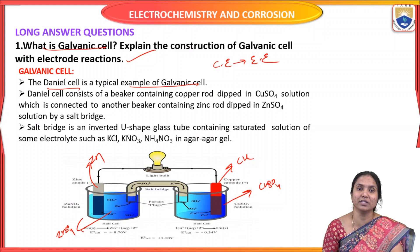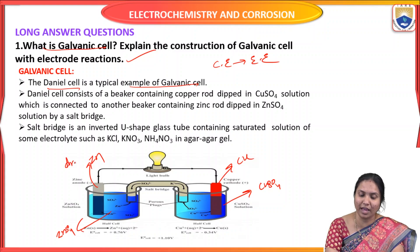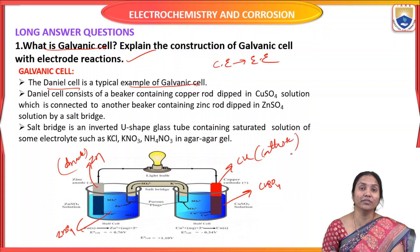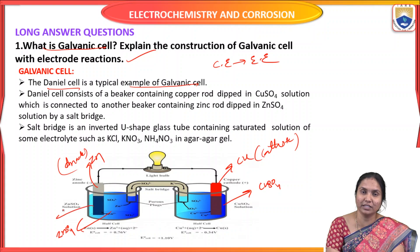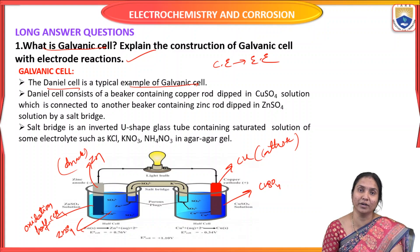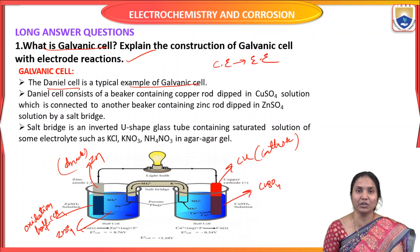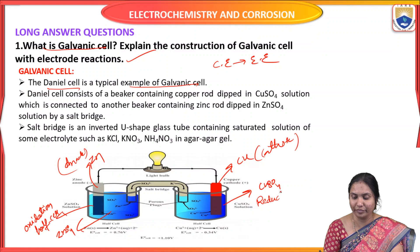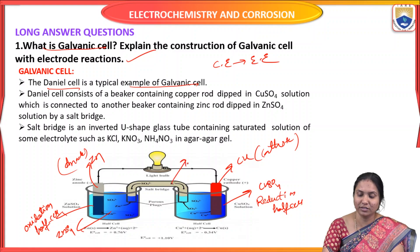According to the electrochemical series, in zinc and copper, zinc acts as the anode and copper acts as the cathode. When zinc is dipped in zinc sulfate solution, this half cell is called the oxidation half cell. Copper electrode generally acts as cathode, so copper dipped in copper sulfate solution acts as the reduction half cell.